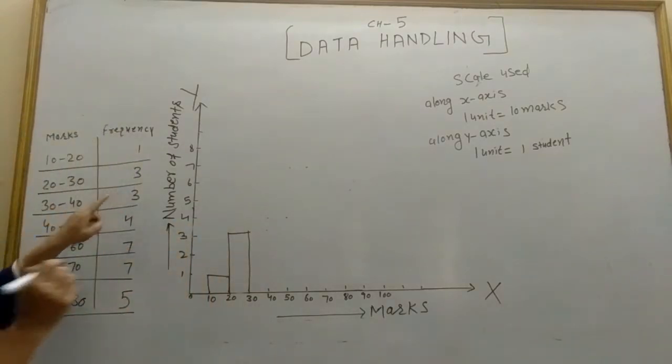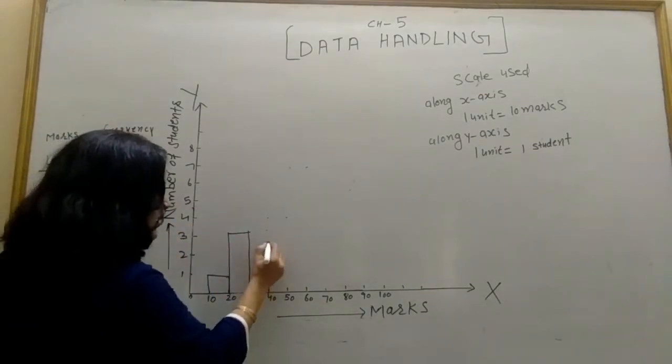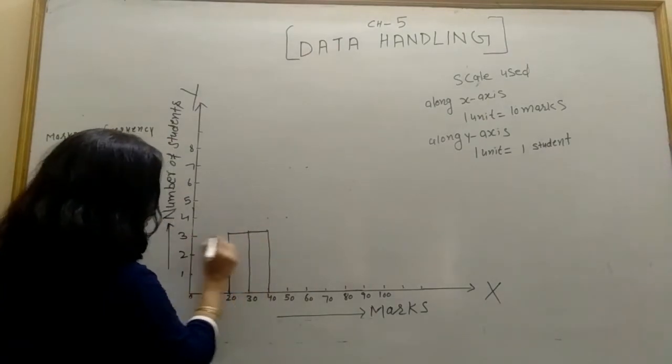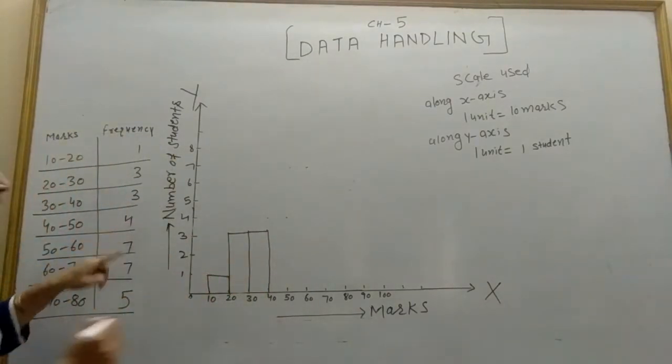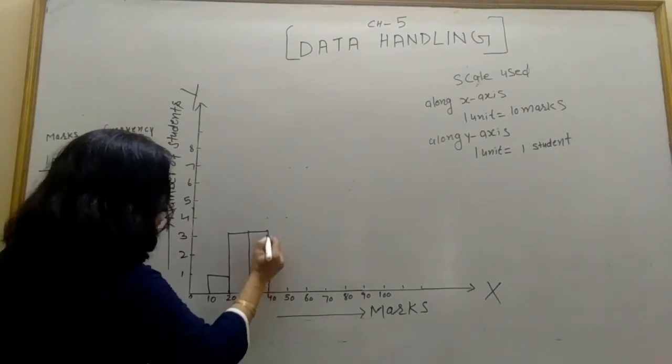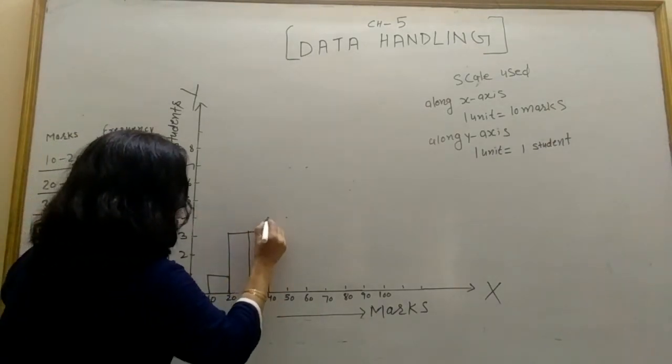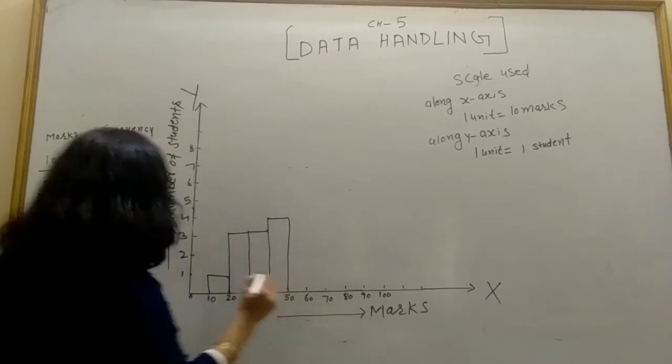Then 30 to 40, again three students. 40 to 50, four students, parallel to this, up to here.